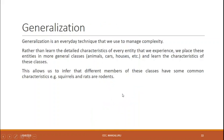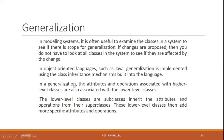Next, we will look at generalization. Generalization is an everyday technique used to manage complexity. Rather than learning the detailed characteristics of every entity we experience, we place entities into more general classes and learn the characteristics of those classes. This allows us to infer that different members of these classes share common characteristics. In modeling a system, it is useful to examine the classes to see if there is scope for generalization.